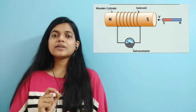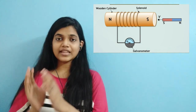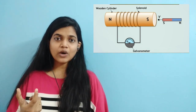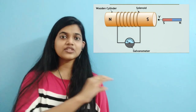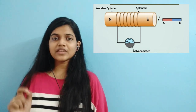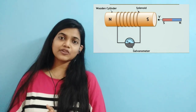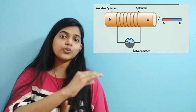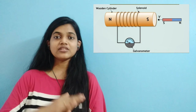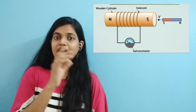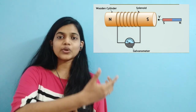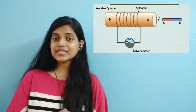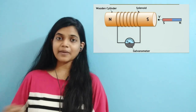Now repeat the same experiment with a slight difference — reverse the polarity of the magnet. Keep the south pole facing the solenoid and move it towards and away from it. Again, whenever the magnet is moving there is a deflection in the galvanometer, but this time when the south pole moves towards the coil we see deflection to the left side, and when it moves away we see deflection to the right side — opposite to what we observed with the north pole. So the direction of current flow inside the coil also depends on the polarity of the magnet.